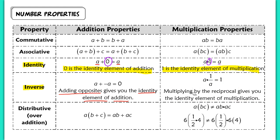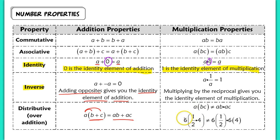For the distributive property, it only works when distributing over addition. You distribute a to both terms: a times (b + c) equals ab + ac. It does not work when you're multiplying. Many students get confused and want to distribute over multiplication, but a times bc is not equal to ab times ac. For example, to simplify 6 times 1/2 times 4, you don't distribute — you just multiply straight through.